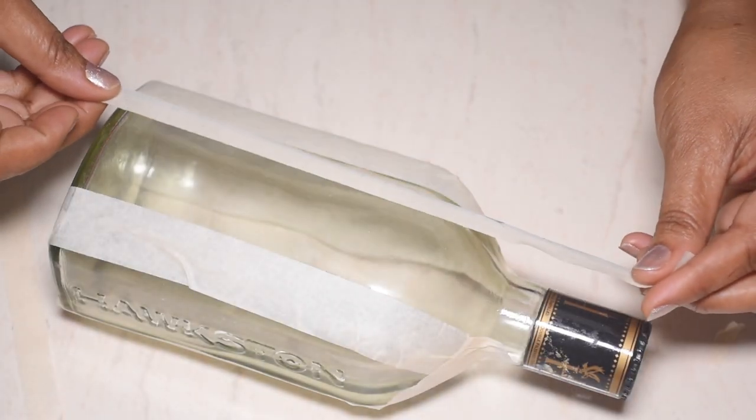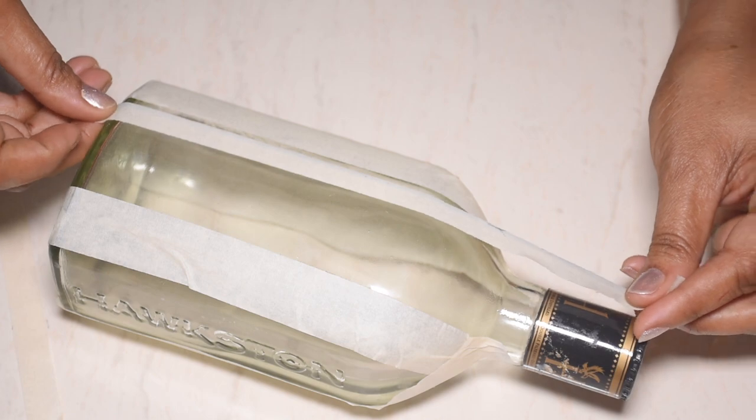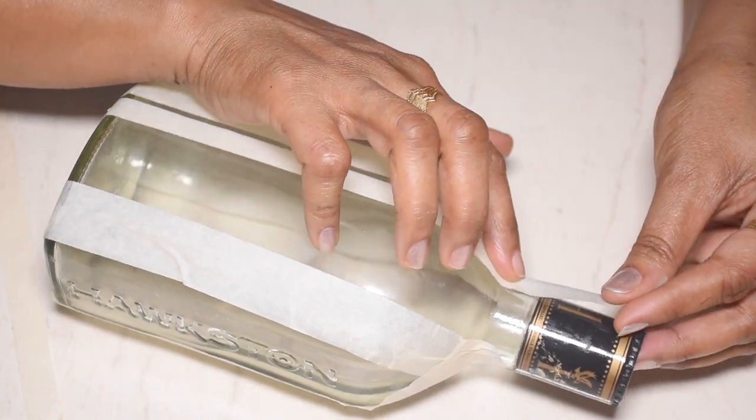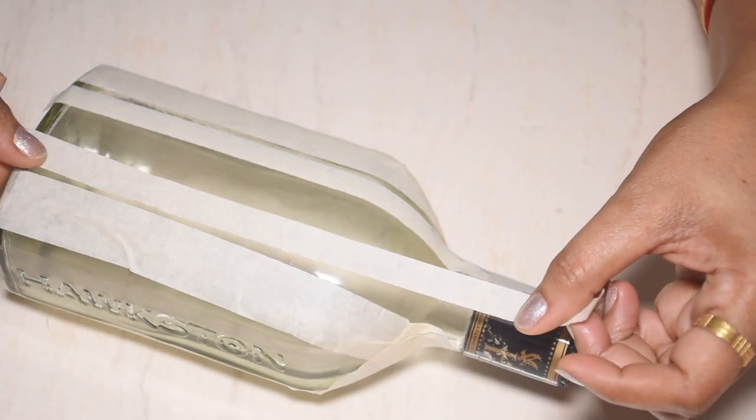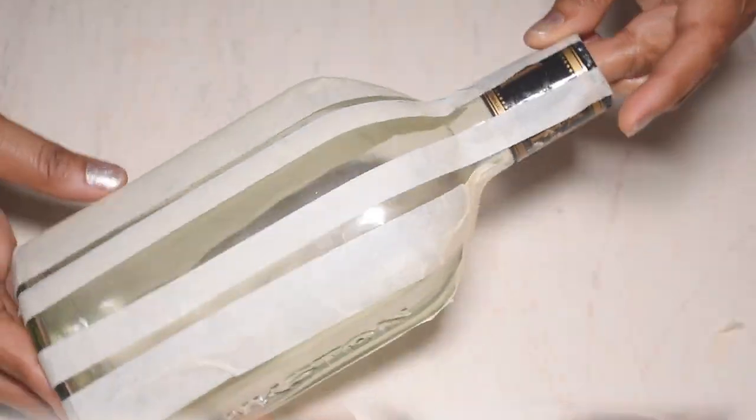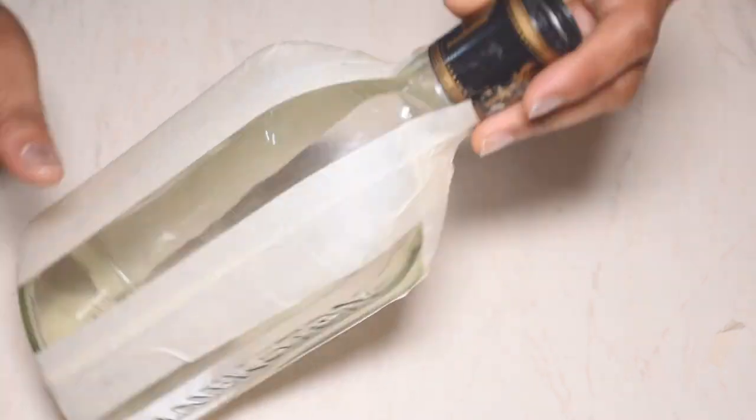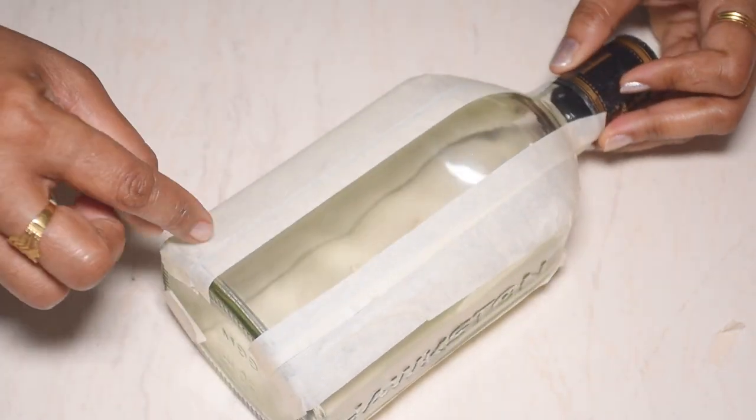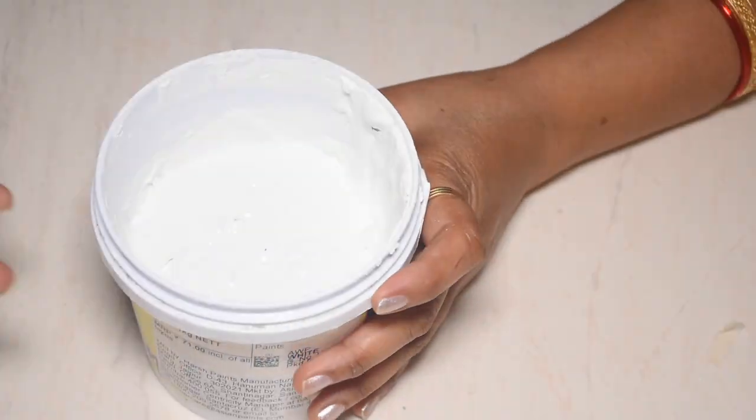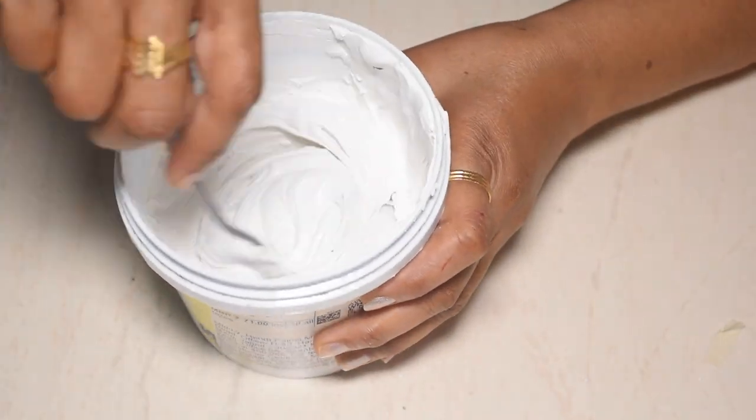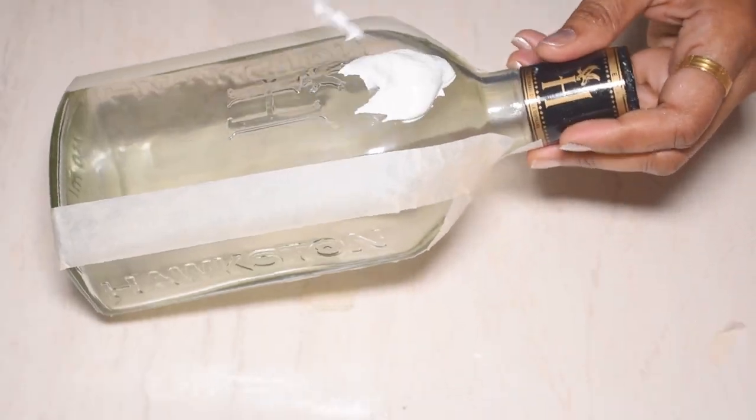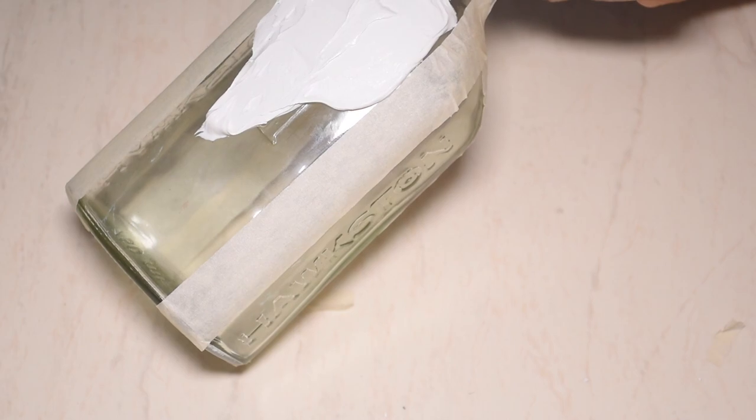Now we put the masking tape on the other side of the bottle. The pattern is slightly different. For the bottle, we will use wall care putty. We spread the texture paste on the bottle.